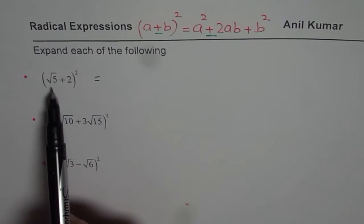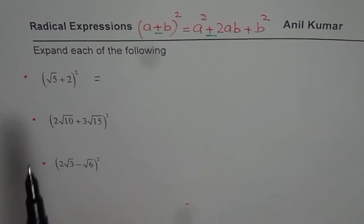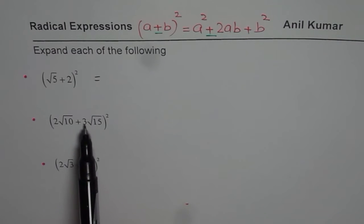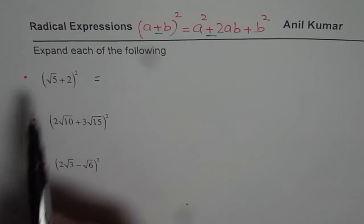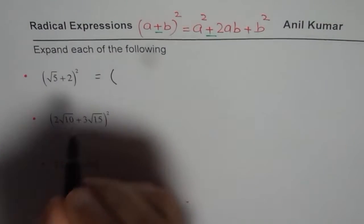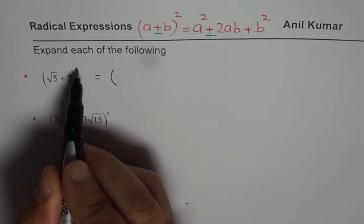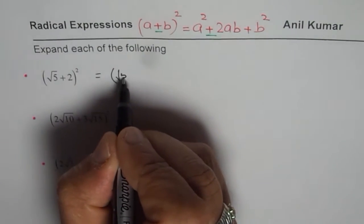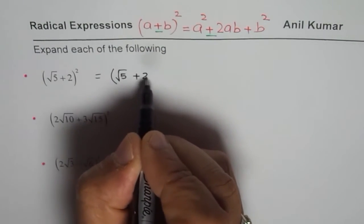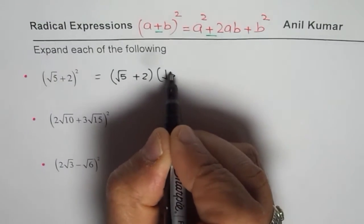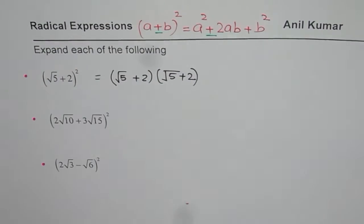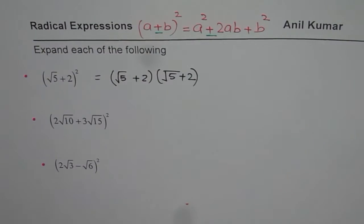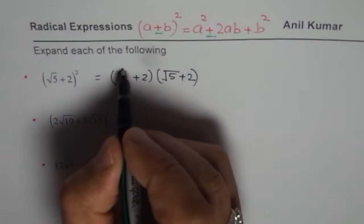The first one is (√5 + 2)², then we have (2√10 + 3√15)², and (2√3 - √6)². Let's begin with the very first one. When I say (√5 + 2)², it really means (√5 + 2) times (√5 + 2) — there is one factor which is multiplied to itself, so this binomial is being multiplied to itself.